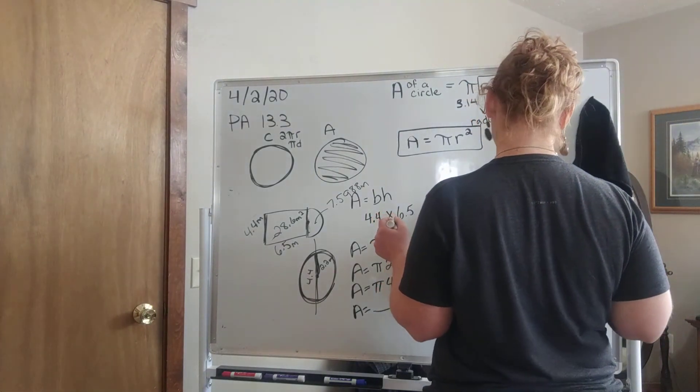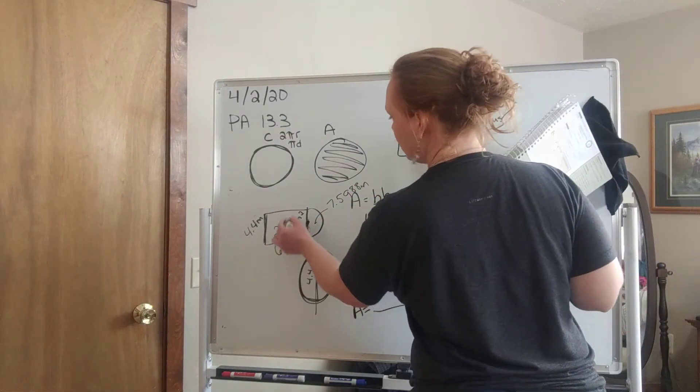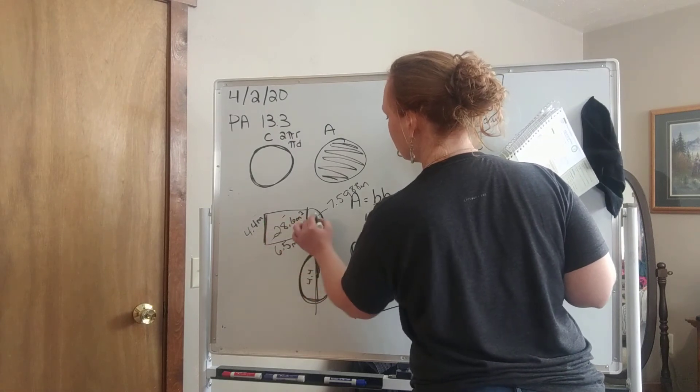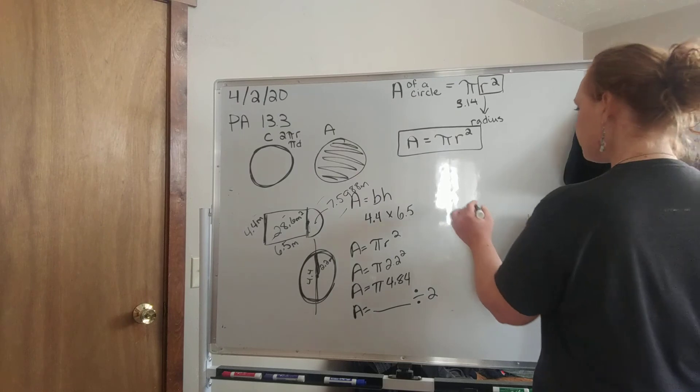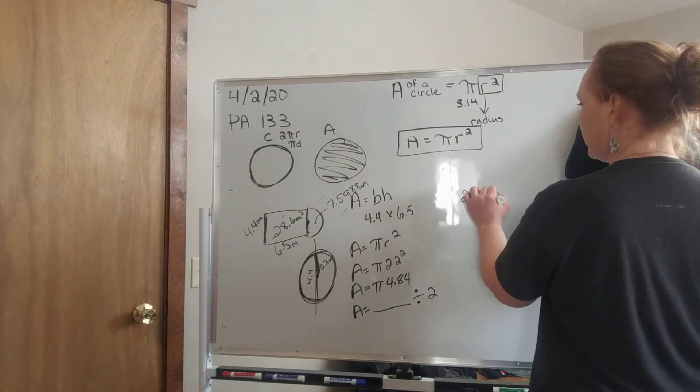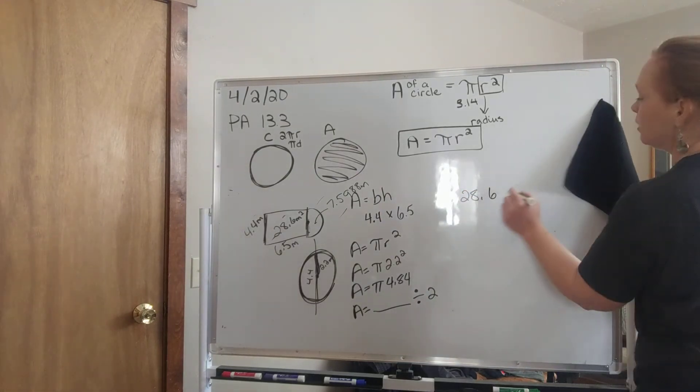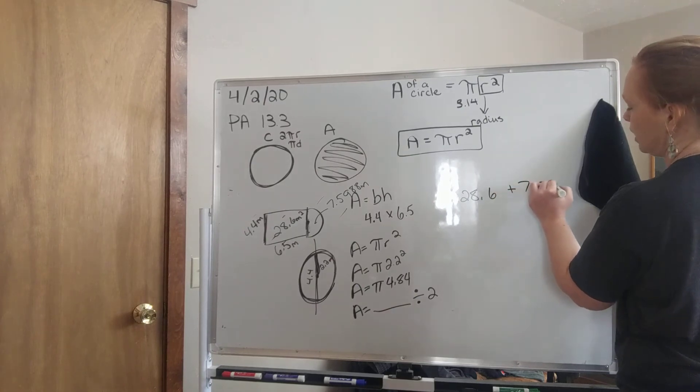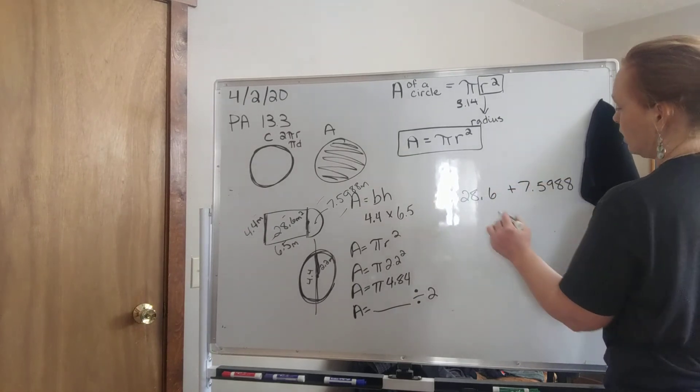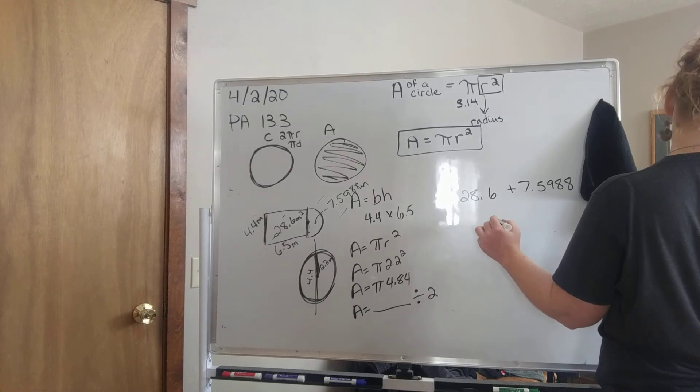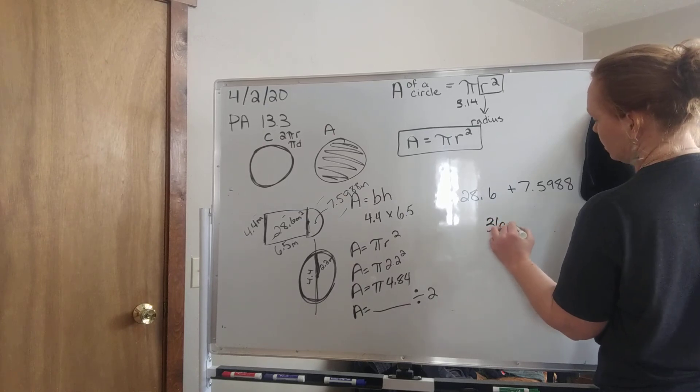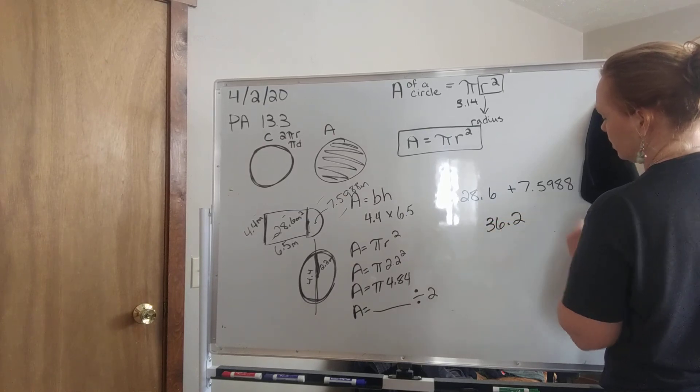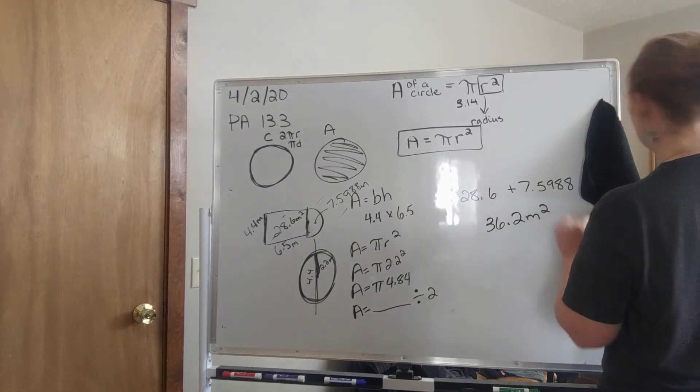So now what do I need to do? I need to add the area of the rectangle to the area of the semicircle, so 28.6. Go ahead and put this in your calculator, plus 7.5988, and that will give us 36.2 when we round to the nearest tenth, and we have meters squared.